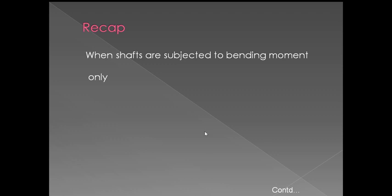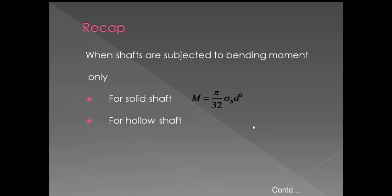Next, when shafts are subjected to bending moment only: for the solid shaft, M equals pi by 32 into sigma_b into d cubed, where M is the bending moment, sigma_b is the bending stress, and d is the diameter. For a hollow shaft, M equals pi by 32 into sigma_b into d_O cubed into (1 minus k to the power 4).